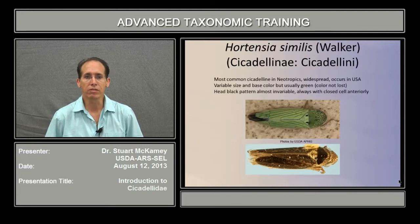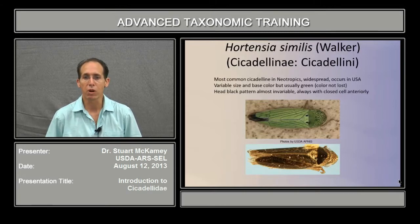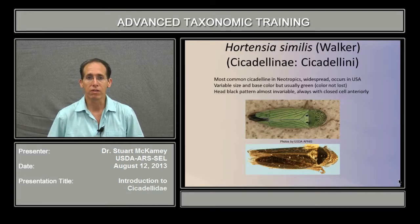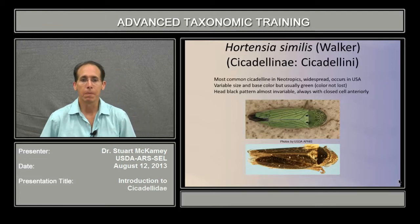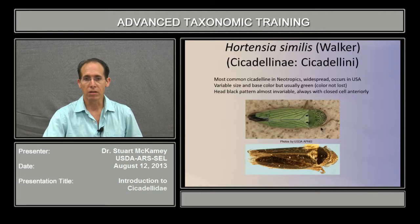The first is Hortensia similis. This is a sharpshooter and it's the most common cicadelline in the neotropics. It's widespread and occurs in the USA. It's variable in size and the base color is variable, but it's usually this bright green that you see on the top, and the color is never lost in death. The head black pattern, though, is almost invariable, and it always has this closed cell that you can see in front.